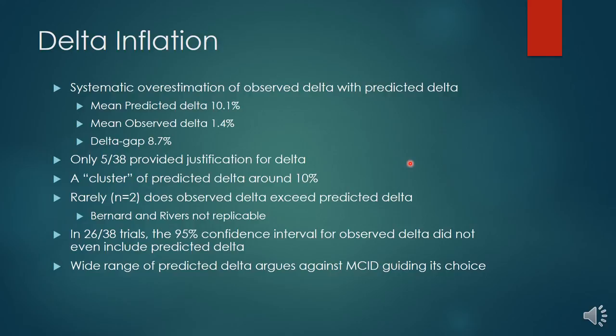Delta inflation, then, is a systematic overestimation of delta. The mean predicted delta was 10%; the mean observed was 1.4%. Only five of the 38 trials provided justification for delta, and the justification amounts to logistical constraints. In 26 of the 38 trials, the 95% confidence interval excluded the predicted delta — meaning if they were looking for a clinically meaningful effect, they excluded it. And the fact that this is the same outcome — short-term proportional mortality in the ICU — argues against using minimal clinically important difference as a guide, because you cannot say a minimal clinically important difference is 3% in one study and 20% in another for the same outcome. That argument doesn't hold water.